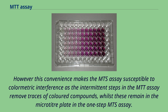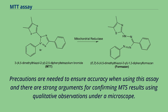However, this convenience makes the MTS assay susceptible to colorimetric interference, as the intermittent steps in the MTT assay remove traces of colored compounds, whilst these remain in the microtiter plate in the one-step MTS assay. Precautions are needed to ensure accuracy when using this assay, and there are strong arguments for confirming MTS results using qualitative observations under a microscope.